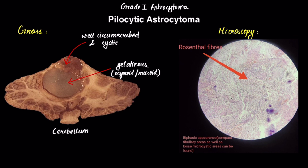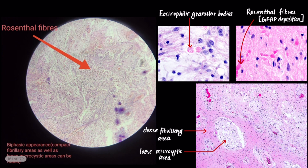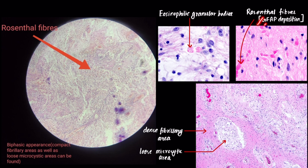Microscopically, the most important feature is Rosenthal fibers. Rosenthal fibers are highly eosinophilic and are formed due to deposition of a certain protein called glial fibrillary acidic protein, or GFAP. The deposition of GFAP at places in the tumor forms these highly eosinophilic Rosenthal fibers.